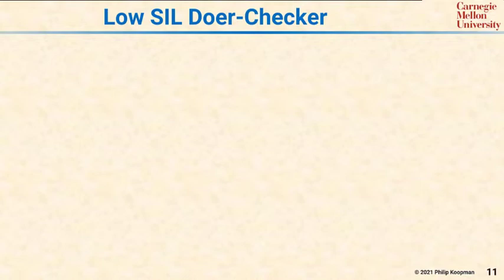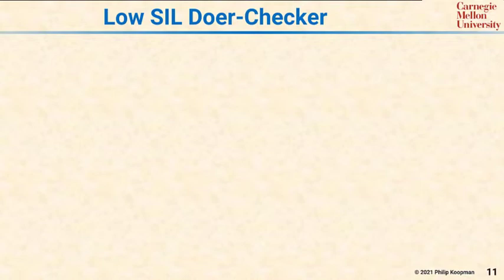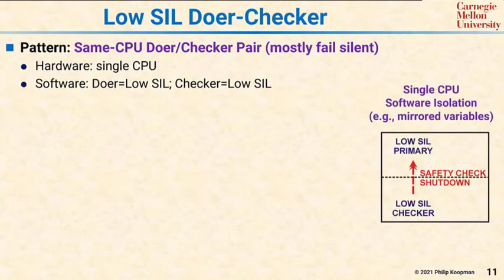There are a number of patterns for doing this, but let's start with the simplest, least expensive one that's suitable for low SIL systems. The pattern is a same CPU doer-checker pair, and it has the property that it mostly fails silent.